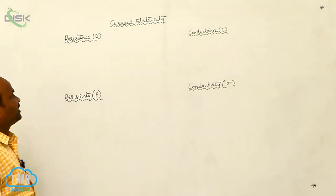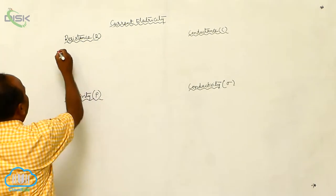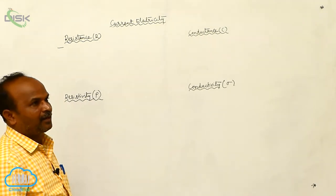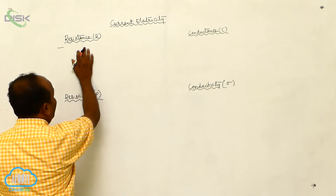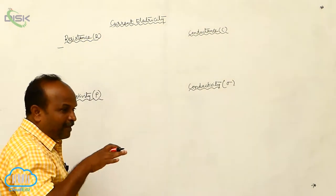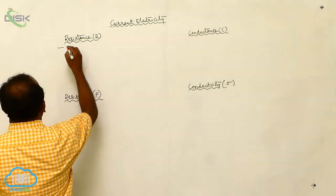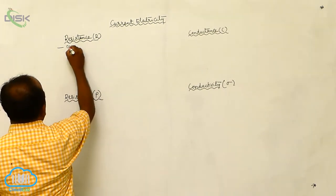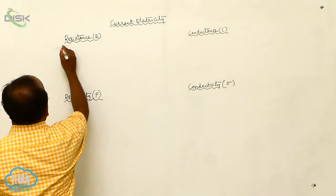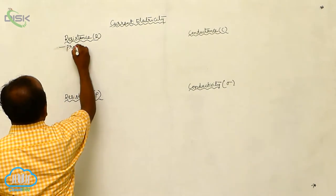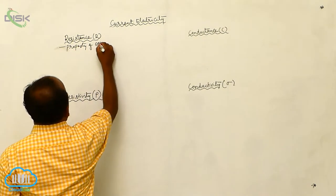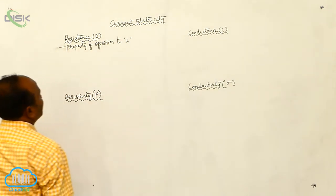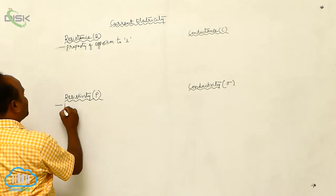These four physical quantities are: resistance represents the opposition to the current — the ability to oppose the current. This physical quantity represents how the current is opposed. It gives you the property of opposition to the current.